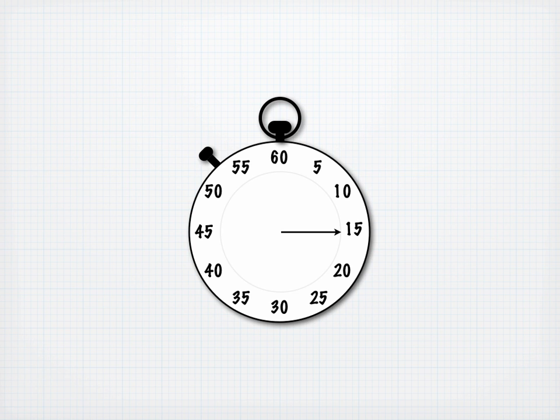As the second hand on our clock moves from point A at time t1 to point B at time t2, it sweeps out an angle that we will call theta.